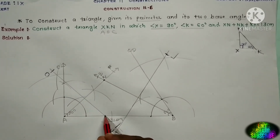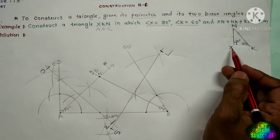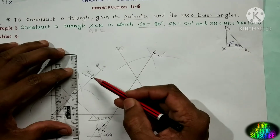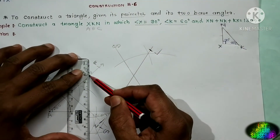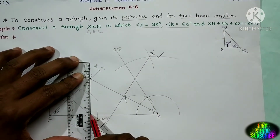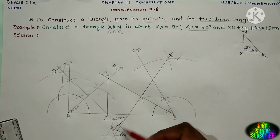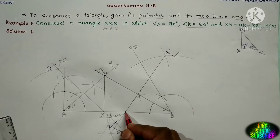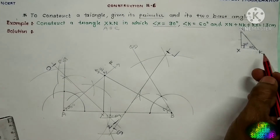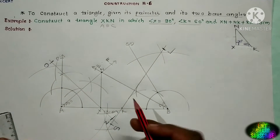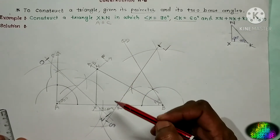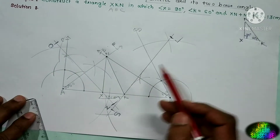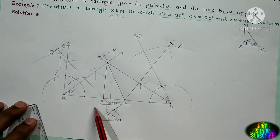The intersection point of OZ and LS — write X here. Join the two points N and X. The second perpendicular bisector SL intersects here — write K at this point. Join the two points N and K. This is the required triangle NXK.